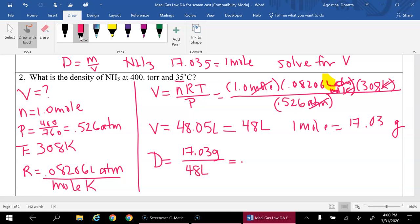So when we divide that, we get, which to two sig figs would be 0.35 grams per liter. And that is density.